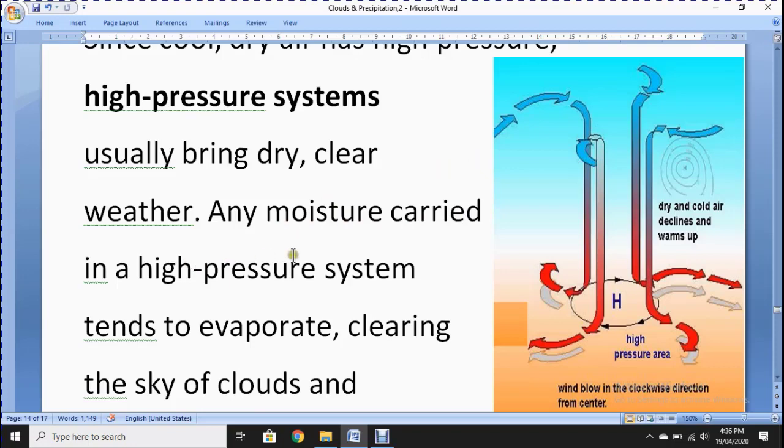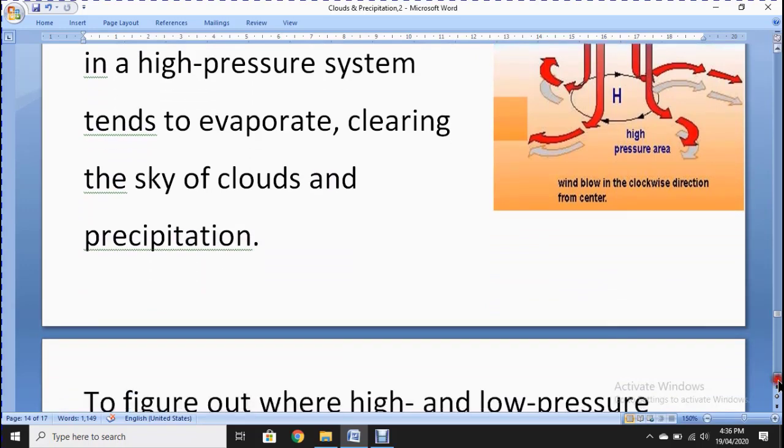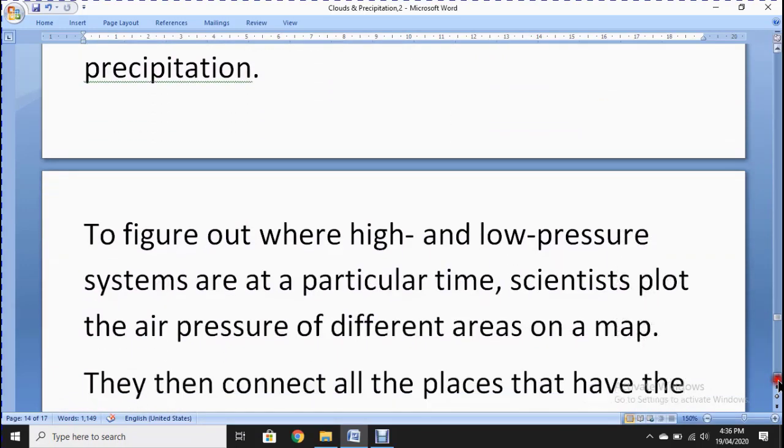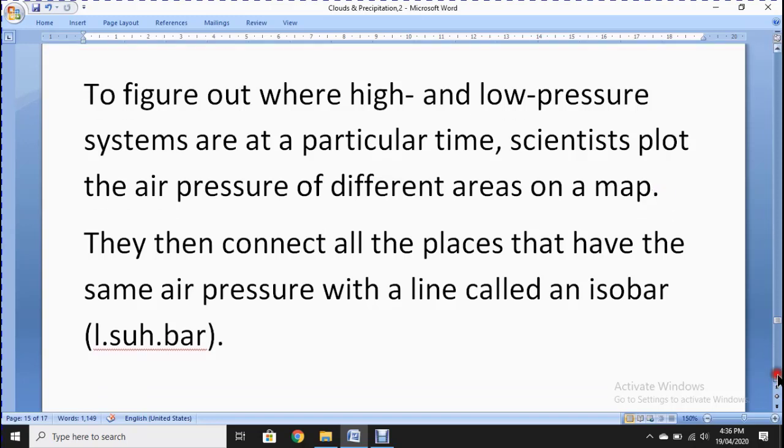Any moisture carried in high pressure system tends to evaporate, clearing the sky of clouds and precipitation. So no clouds means there is no rain or any type of precipitation. To figure out where high and low pressure systems are at a particular time, scientists plot the air pressure of different areas on a map.